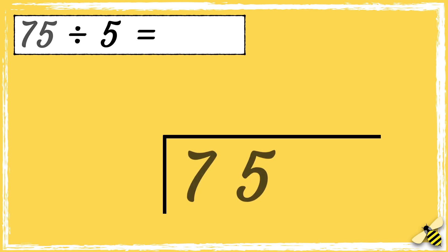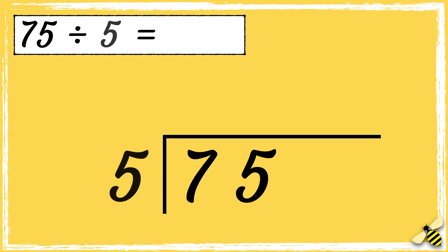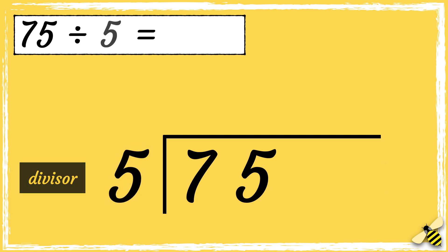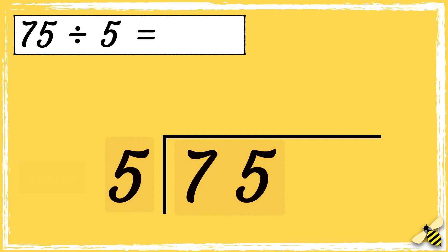We put the number that we're dividing it by, the divisor, next to the bus stop. What we need to do is find out how many times our divisor fits into these numbers. So how many fives go into seven? Five goes into seven once with two left over.